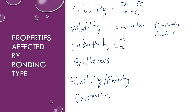Brittleness is like how much a compound breaks apart. Ionic compounds tend to be more brittle, and glass tends to be more brittle. But metals are not very brittle — they're more malleable, able to be bent and shaped without breaking.